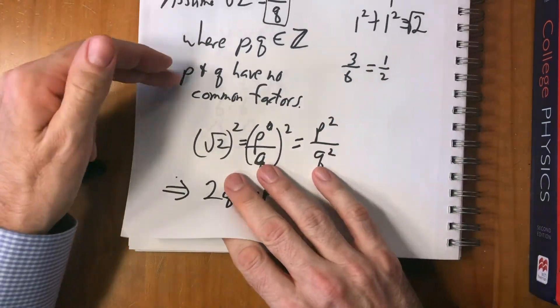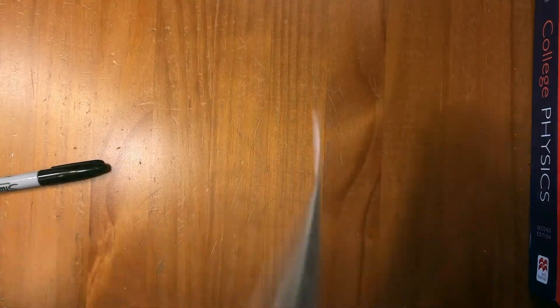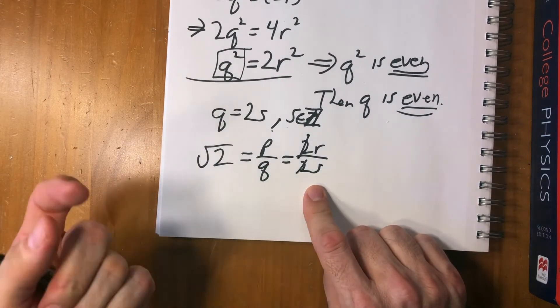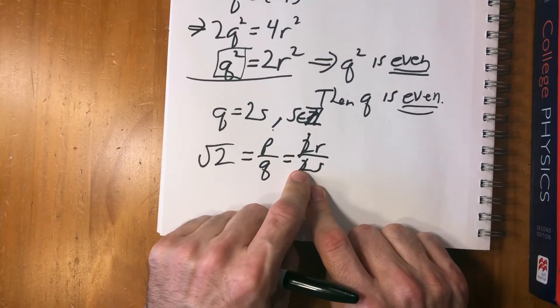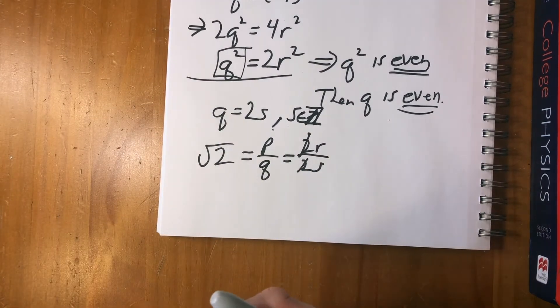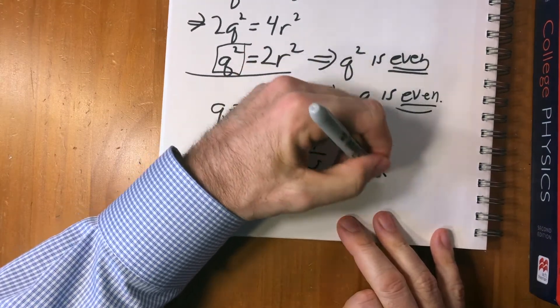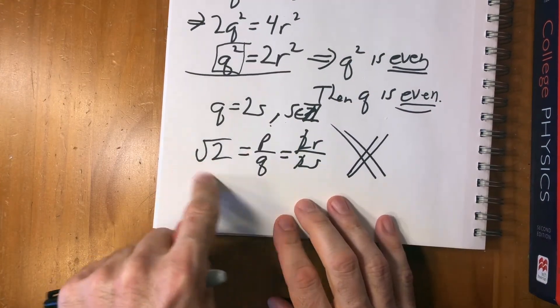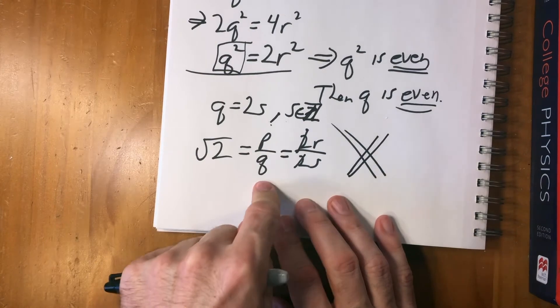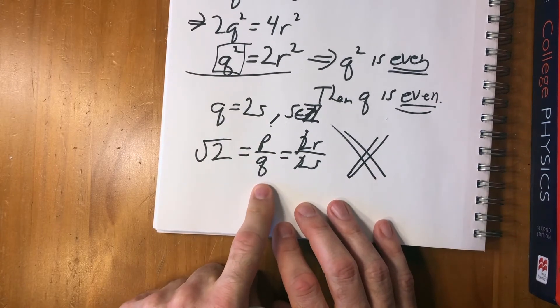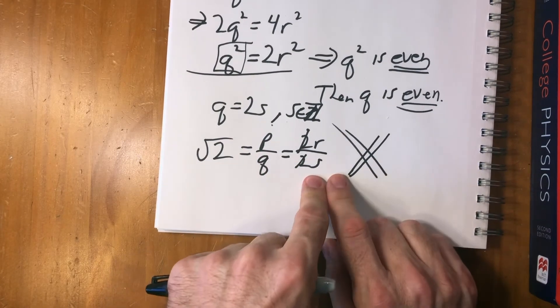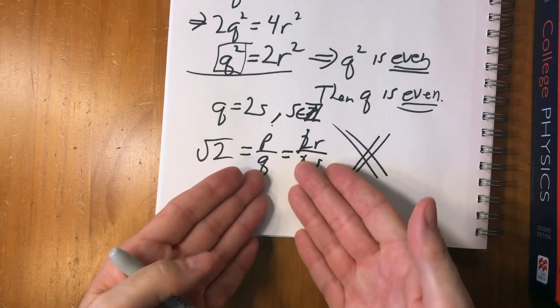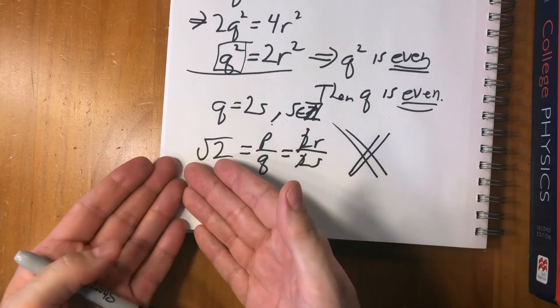But when we started with this assumption, just by doing some math, we ended up proving that both of them do in fact have a common factor. That's a contradiction. Therefore, our assumption was wrong. We started by saying that the square root of two is a fraction, and we just concluded that it can't be a fraction, because if it is a fraction it leads to a contradiction. So it must be something else, because there are no two numbers that will allow this to be true.